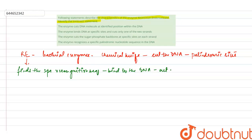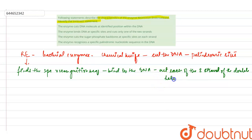After binding, it will cut each of the two strands of the double helix at specific points in the sugar-phosphate backbone.